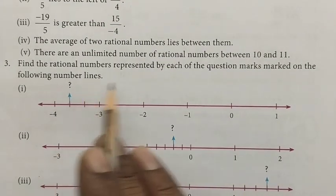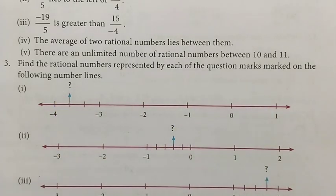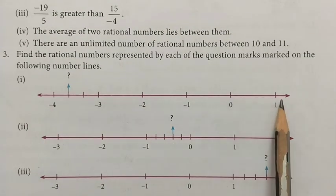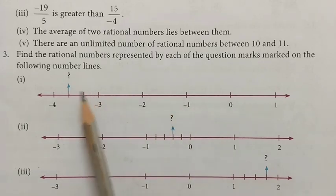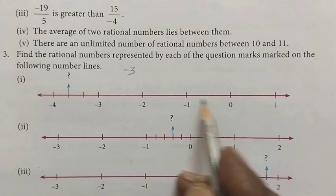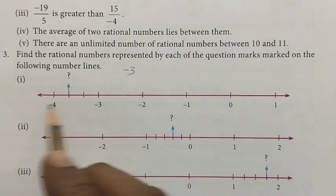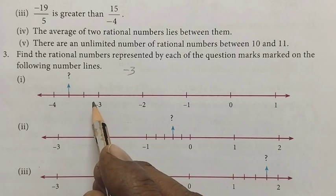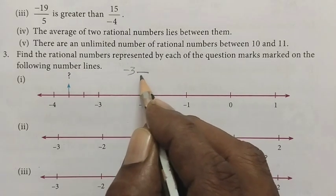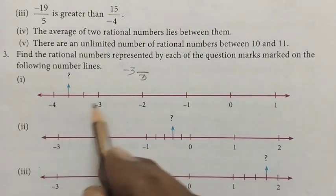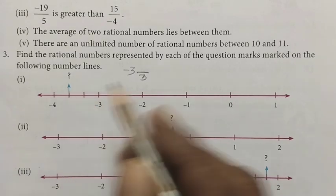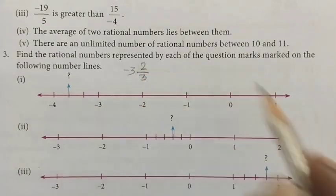Find the rational numbers represented by each of the marks on the following number lines. First number line: zero, one, zero, minus one, minus two, minus three — divided by each of the parts. Part two, part three — divided by each of the parts, three parts. In between, the three parts are divided, crossing one two parts, crossing one. Minus three, two by three. The first one is zero.